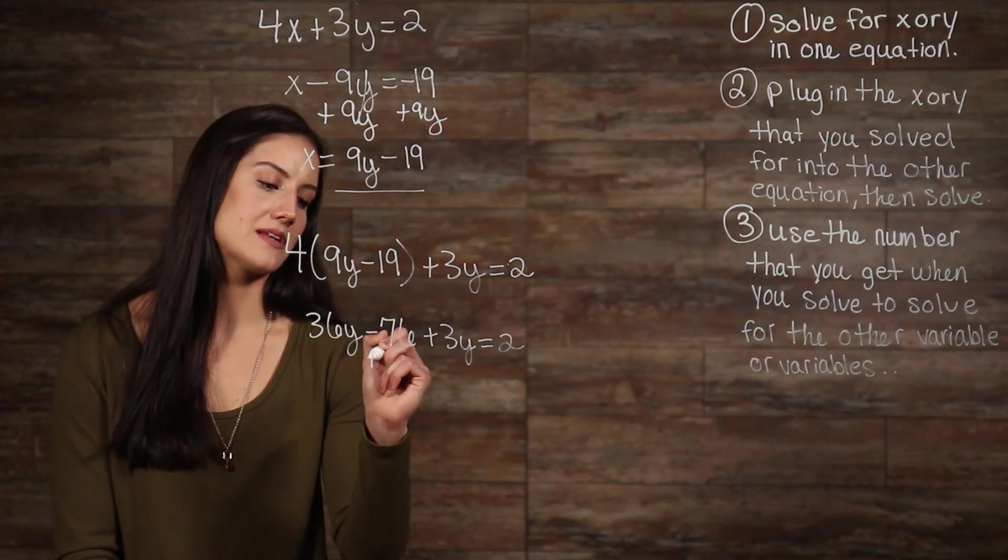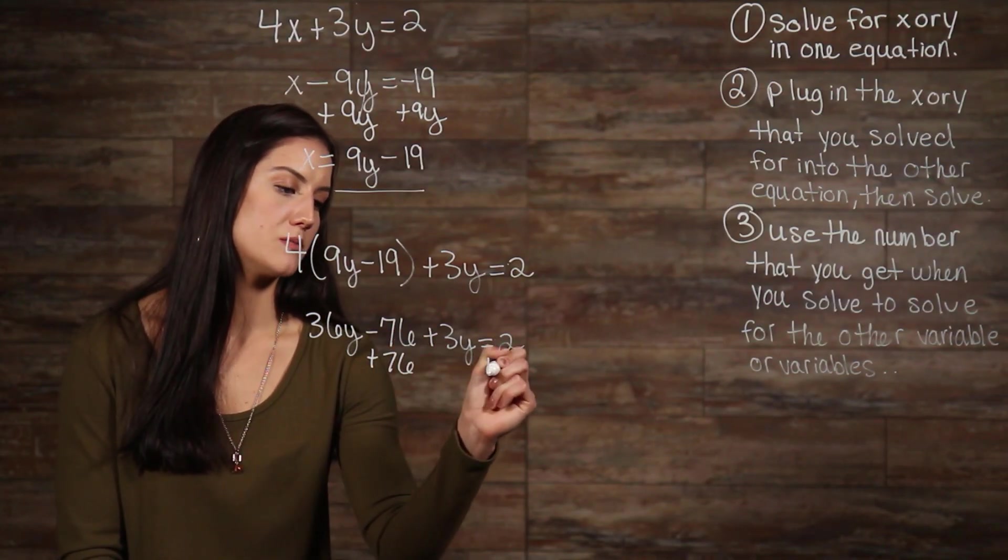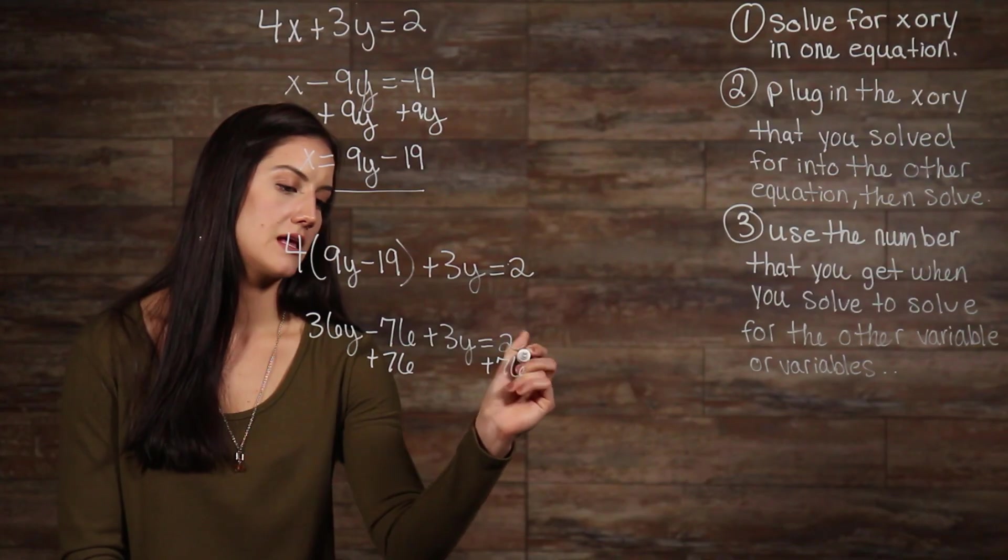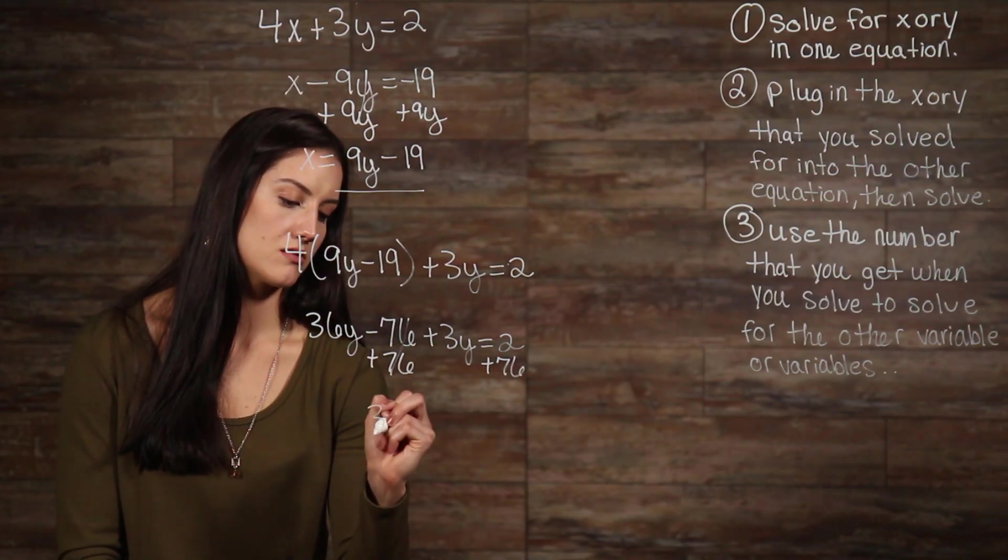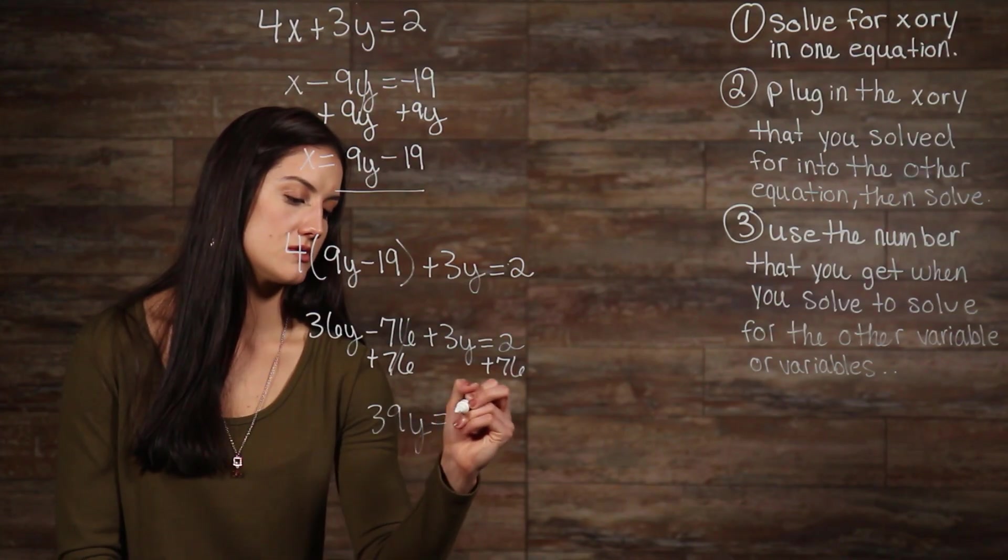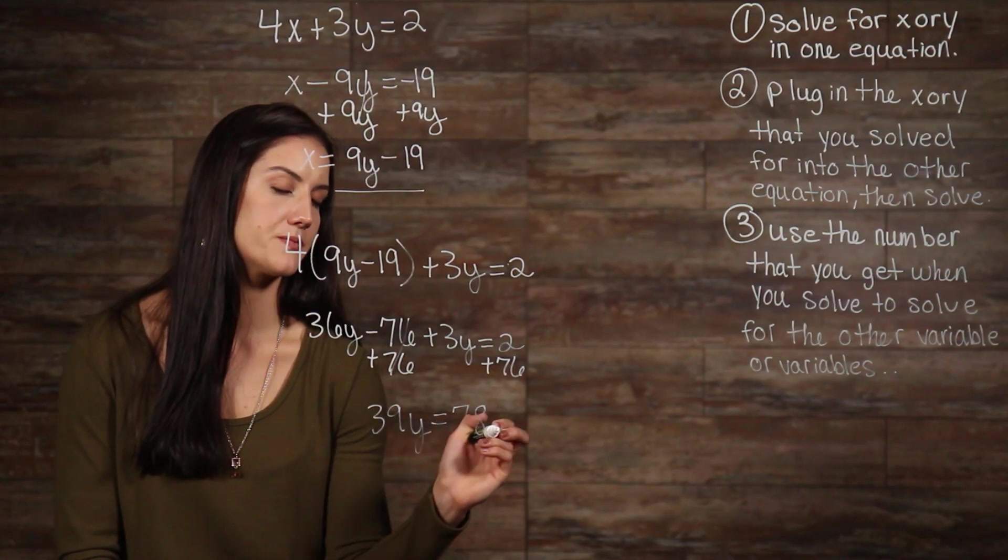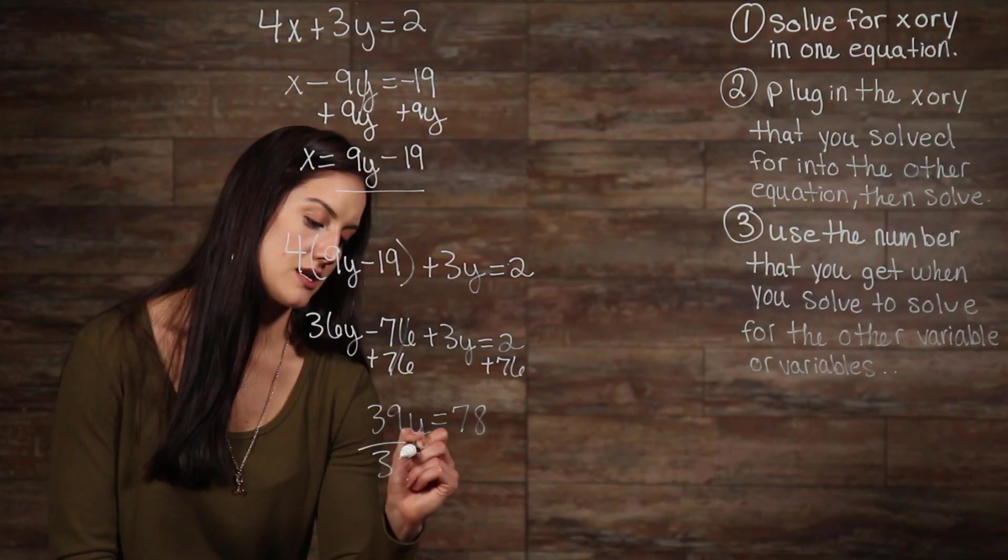Once I add my 76 to both sides, and add my y's together, I get 39y is equal to 78. Now I divide both sides by 39.